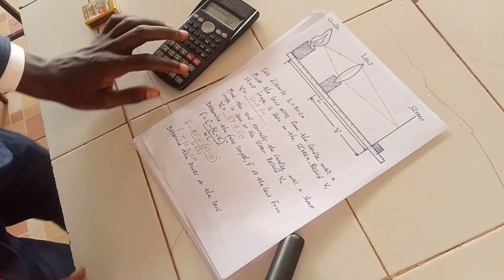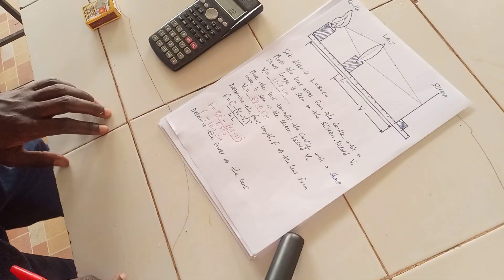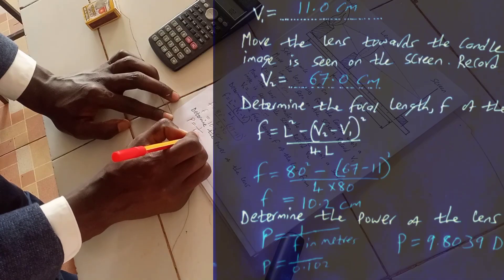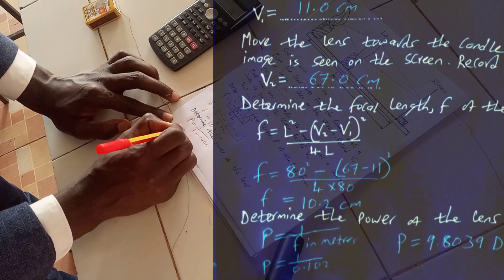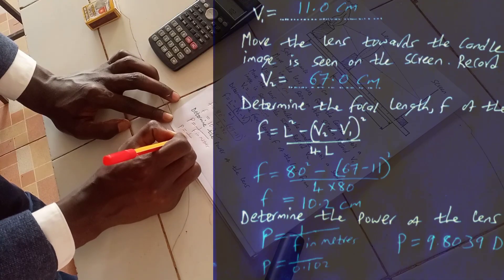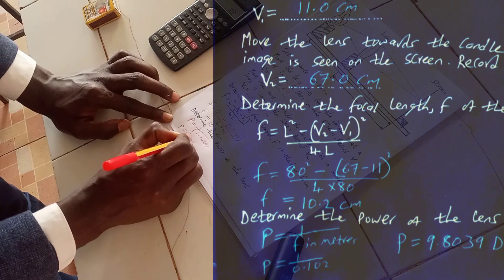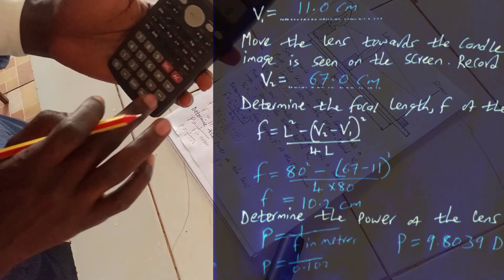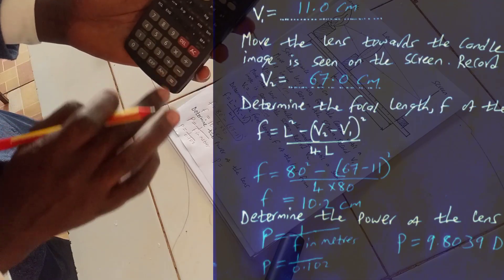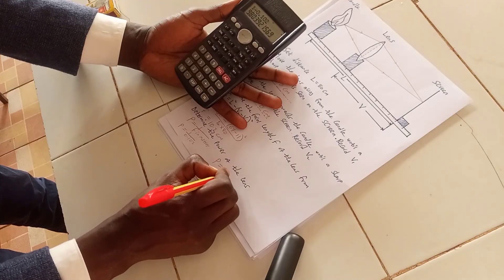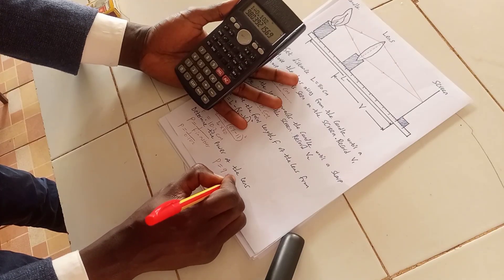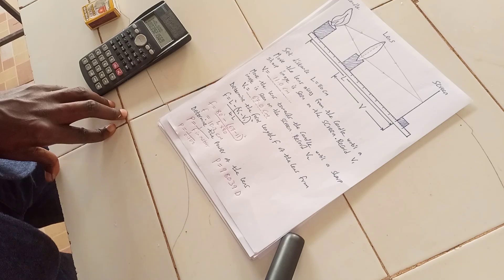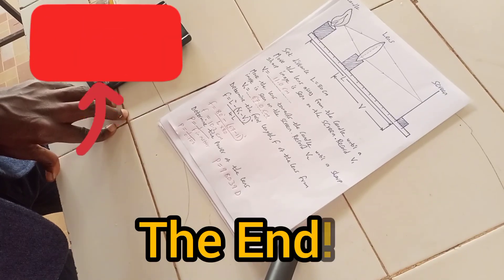We can also get the power of this lens. Power is given by 1 over focal length in meters. So power will be 1 over 0.102 meters. That means the power of this lens is 9.80 diopters. So that is 9.80 diopters — that is the power of the lens we have been able to use.